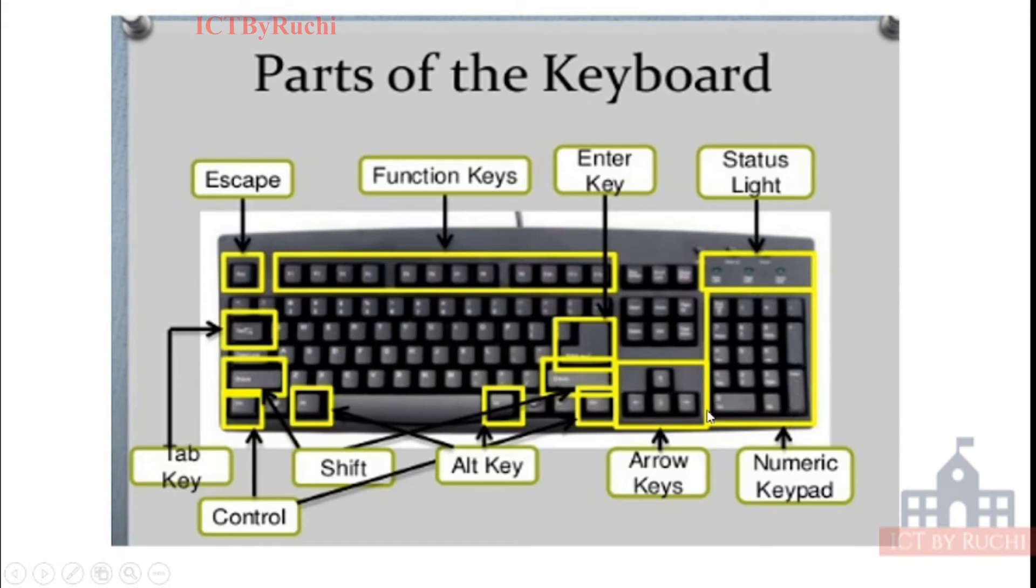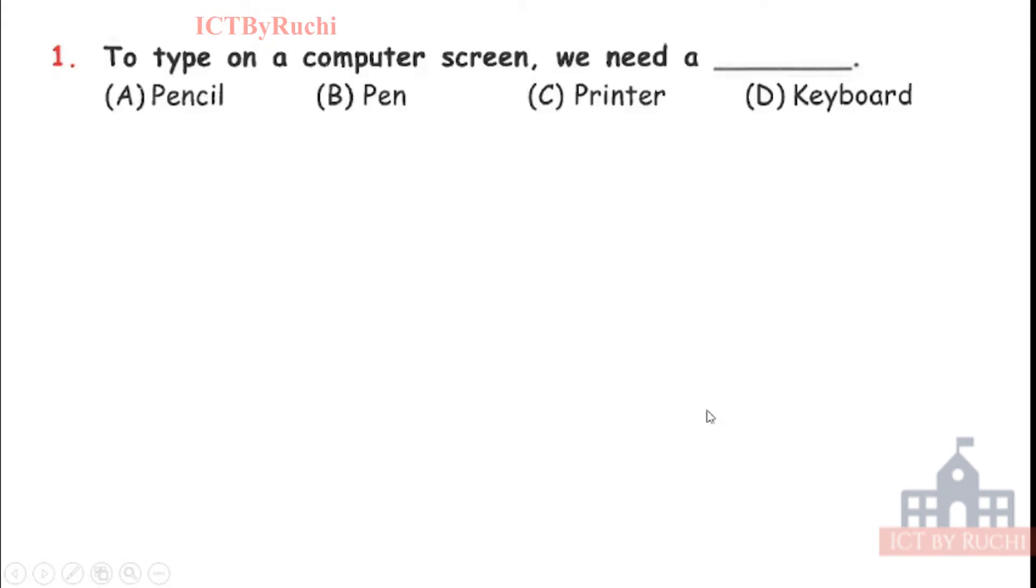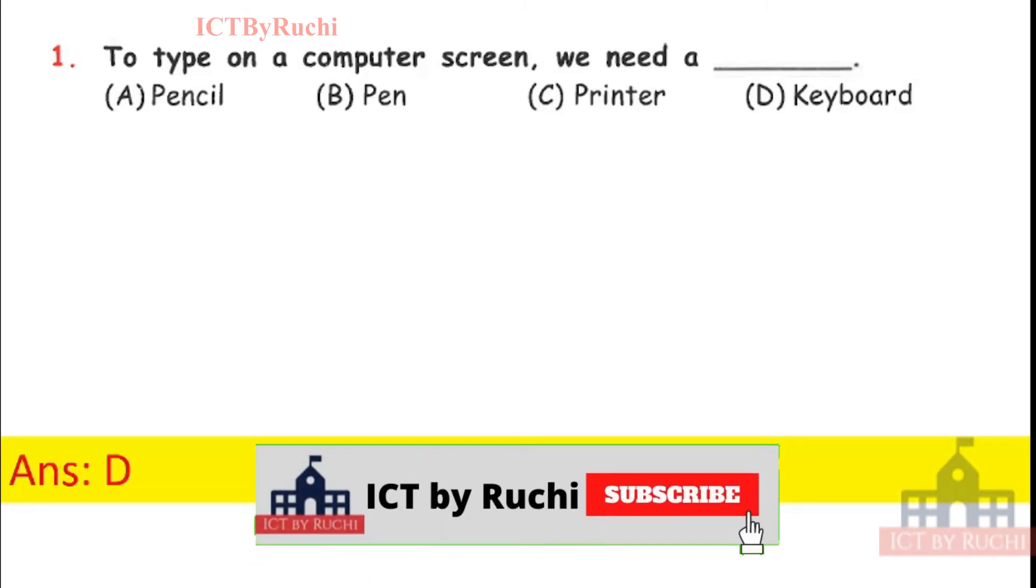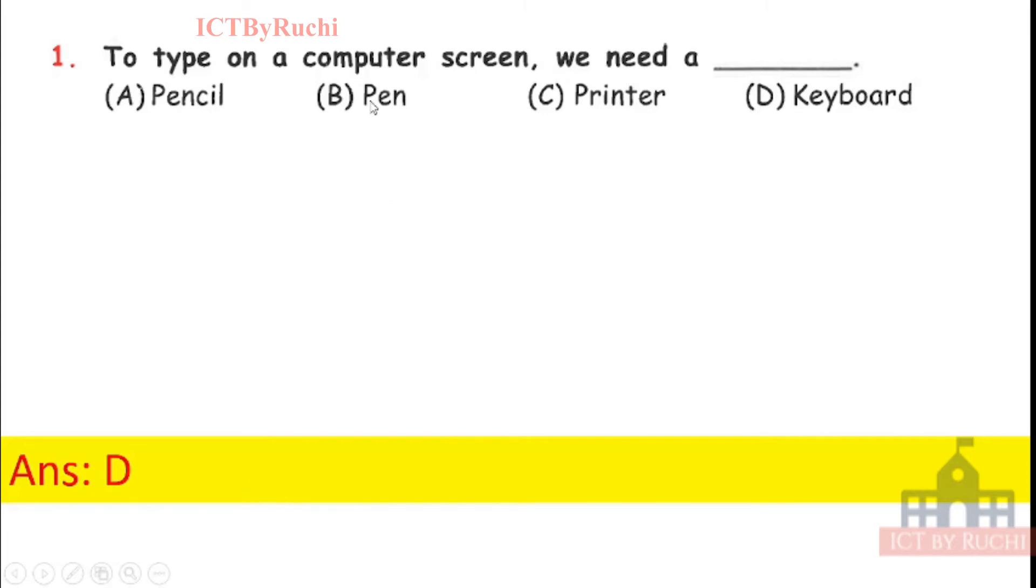Let's jump to the questions. To type on a computer screen, we need a pencil, pen, printer, keyboard. Think answer. Answer is D, keyboard. Because using pencil and pen, we can write on a paper. Printer is used to give the printout. And only through the keyboard we can type on a computer screen.